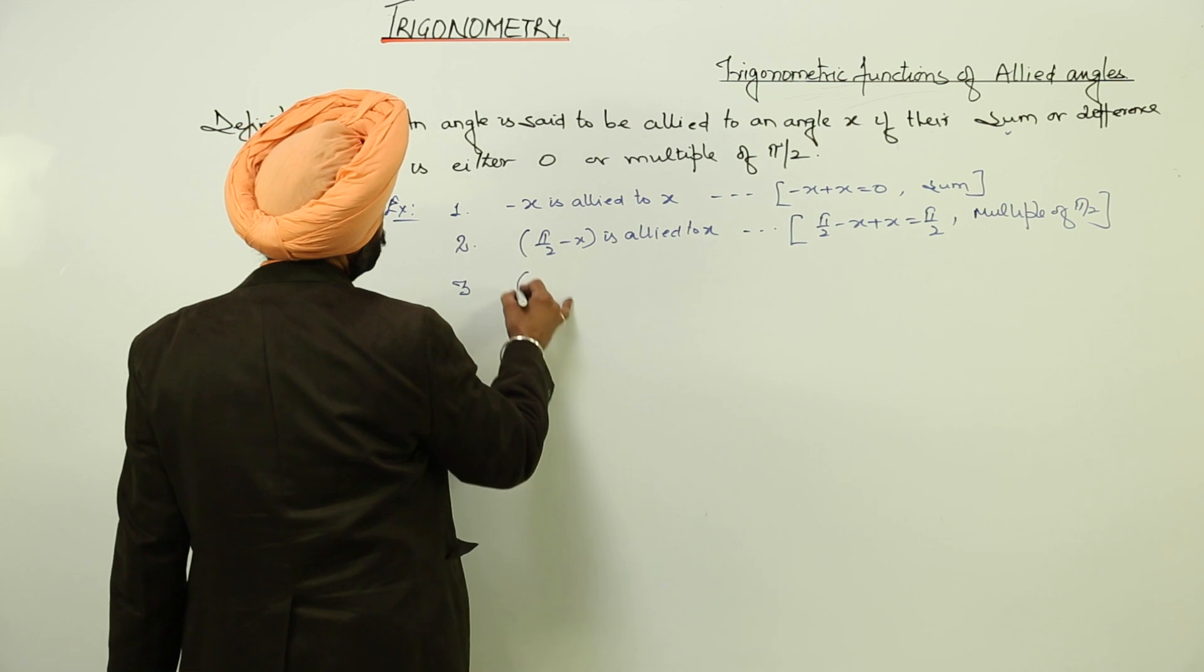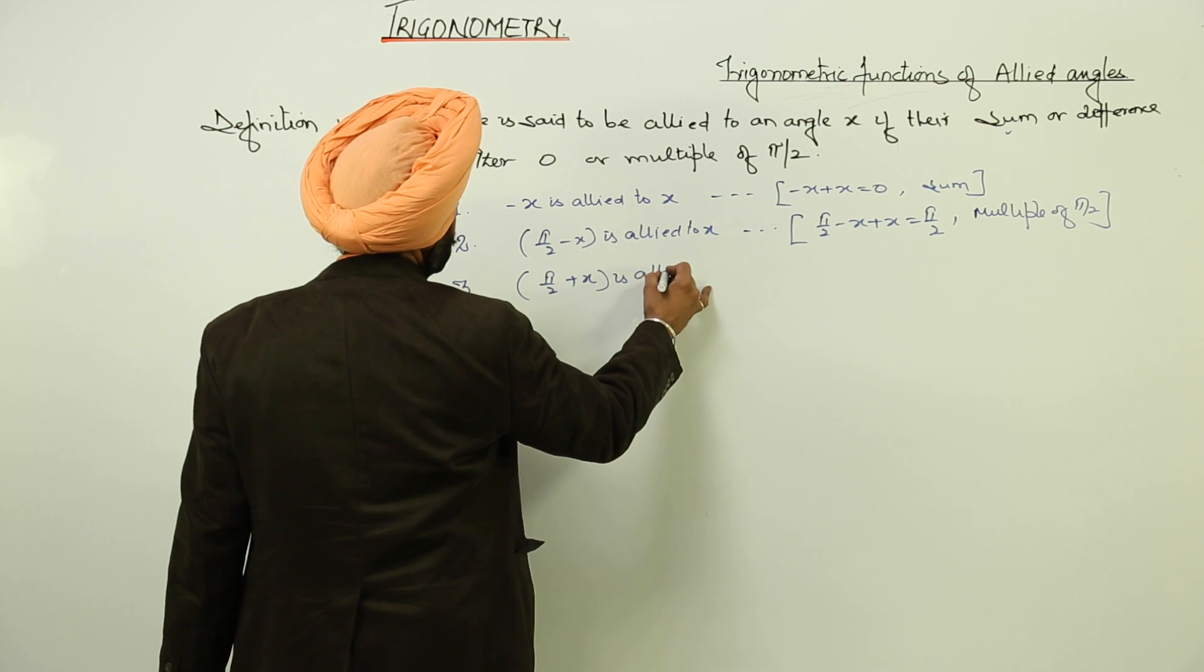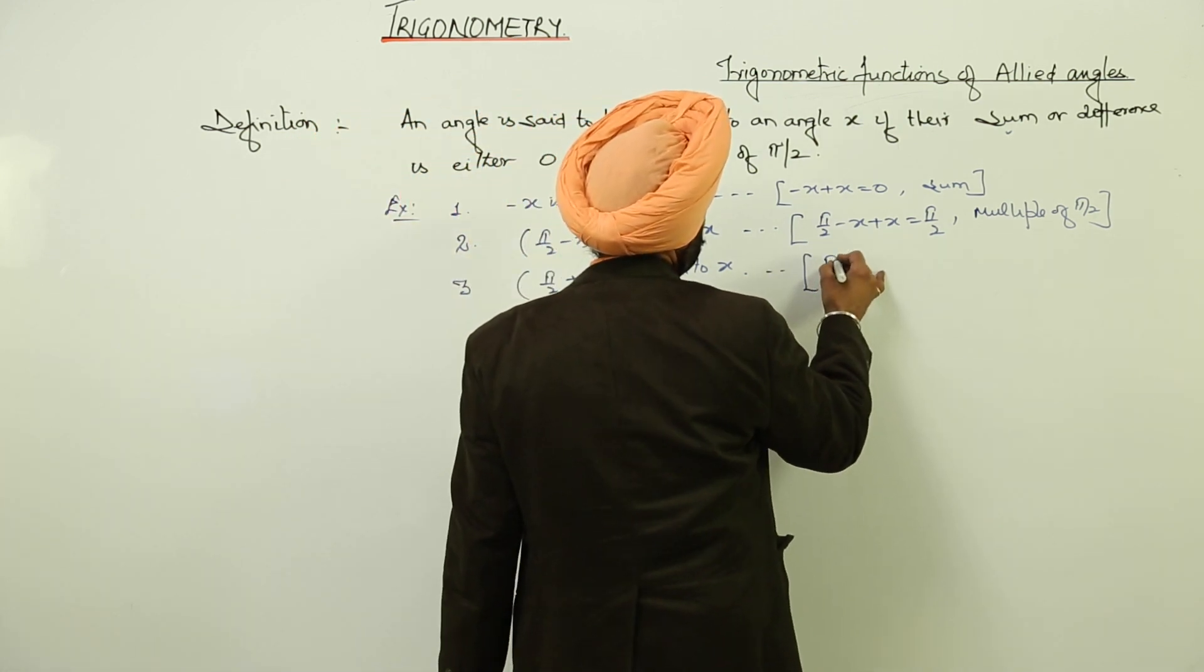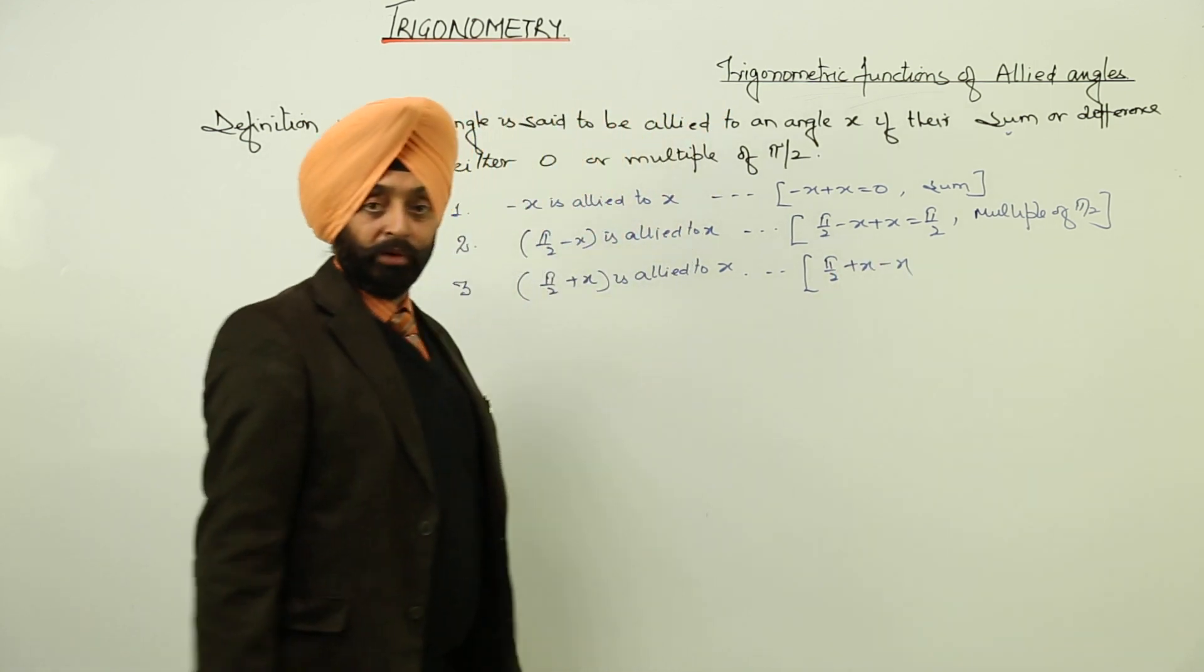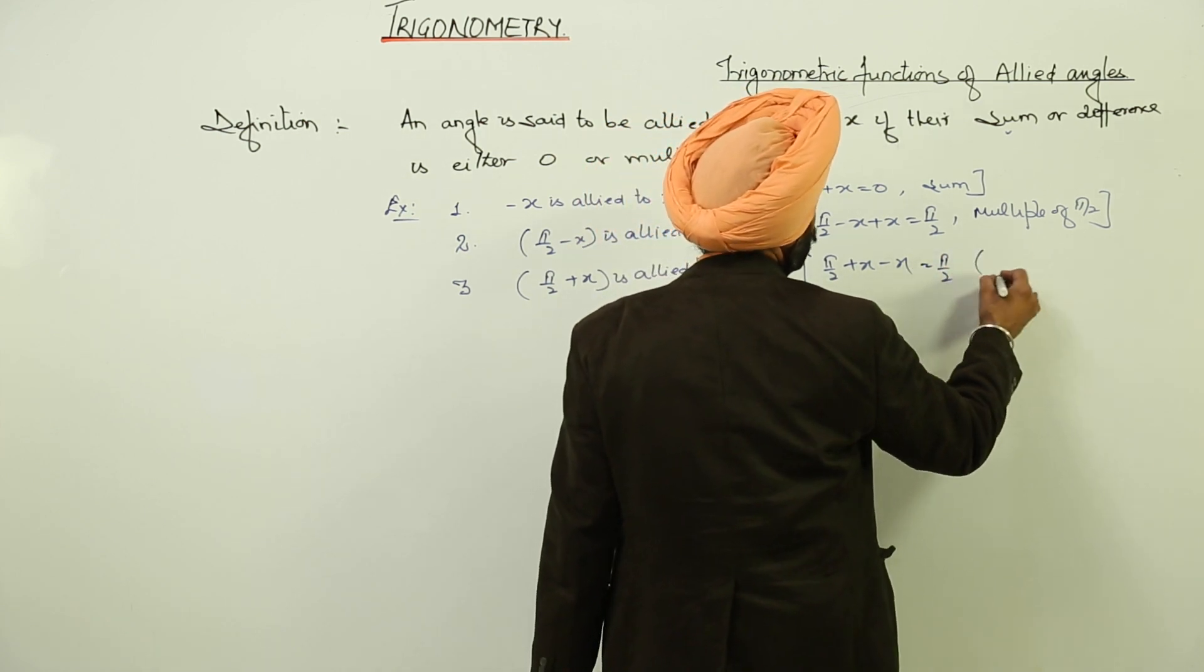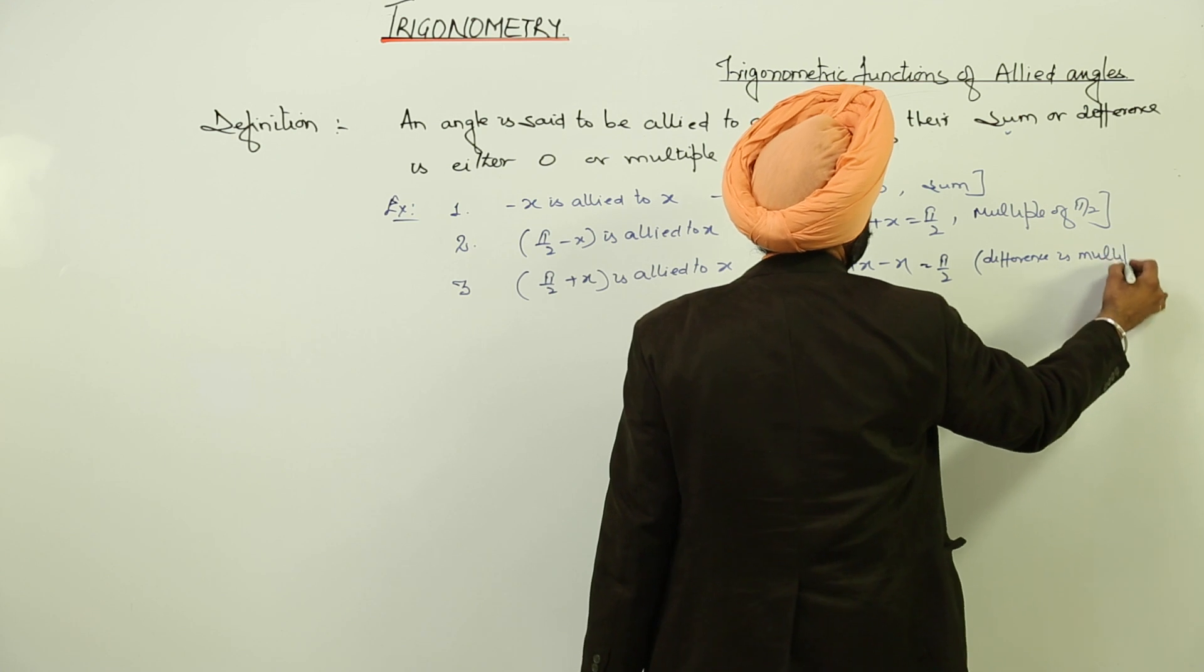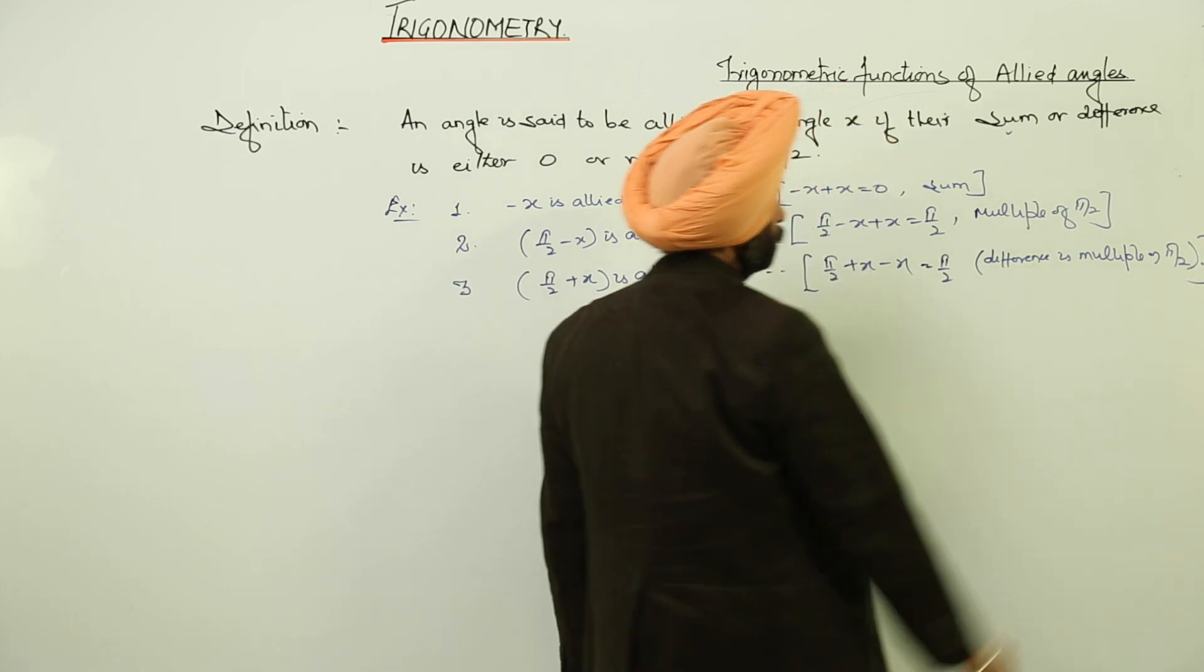Then, we can go similarly for pi by 2 plus x is allied to x. Now, how? How this will be? Just check it. Pi by 2. We have written positive of x. Now, subtracting it from x. So this again becomes pi by 2. Now, what we have used? Difference. Difference is multiple of pi by 2.